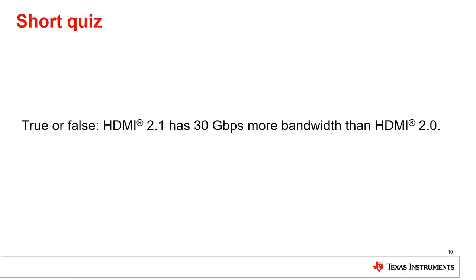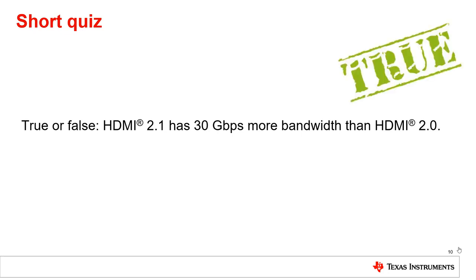To recap what we discussed, let's go over a short quiz. True or false: HDMI 2.1 has 30 gigabits per second more bandwidth than HDMI 2.0. True. HDMI 2.1 has a maximum bandwidth of 48 gigabits per second, whereas HDMI 2.0 has a maximum bandwidth of 18 gigabits per second.